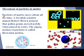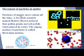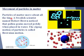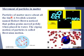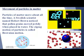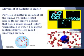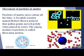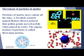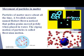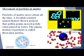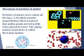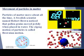Particles of matter move about all the time, as you can observe in the diagram. Label A represents the solid, B represents the liquid, and C represents the gases.